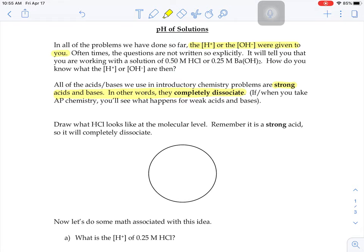So it says draw what hydrochloric acid would look like at the molecular level. All of the acids that we're going to be working with in accelerated chem are strong acids. So that means it's going to completely dissociate. So if you have hydrochloric acid, it does not look like HCl, the molecule.